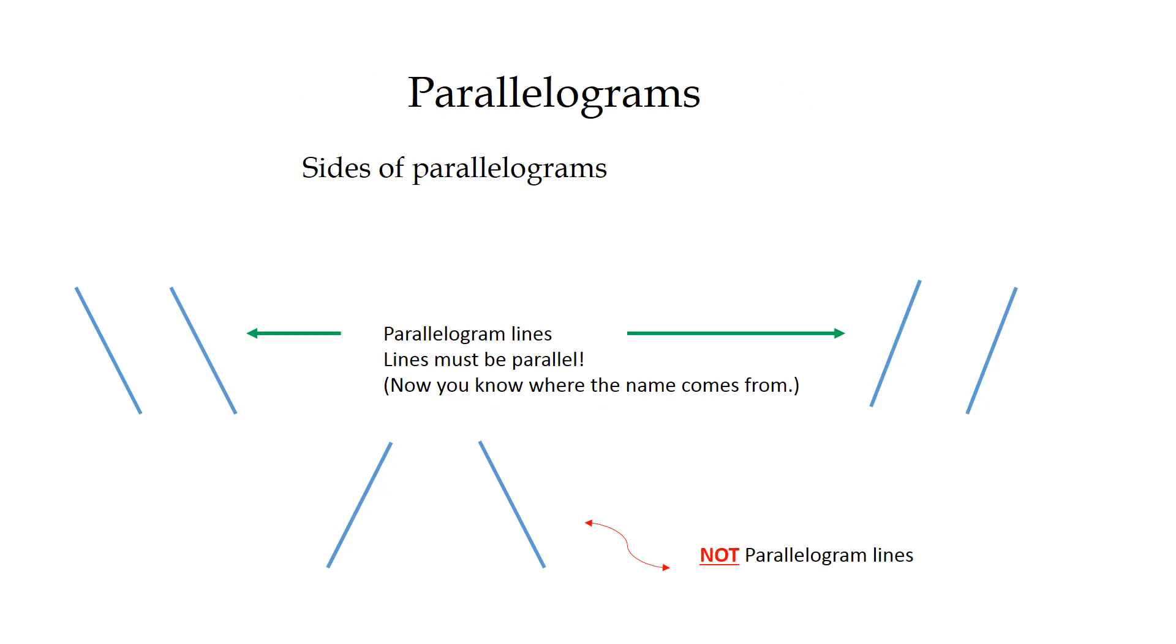Now one note about the sides of parallelograms. The sides, the parallelogram lines, the angled lines, must be moving the same way or showing the same direction. So in other words, the lines must be parallel, and now you know where the name comes from. Parallelogram has to have parallel lines, and you notice at the bottom, these are not parallelogram lines. These two lines are not parallel, so this would not form a parallelogram.